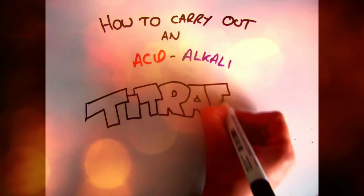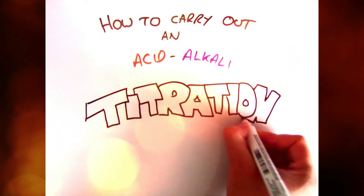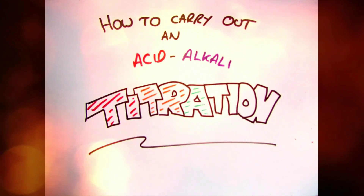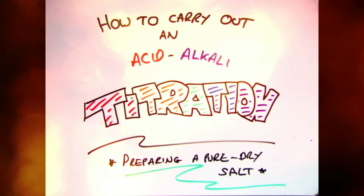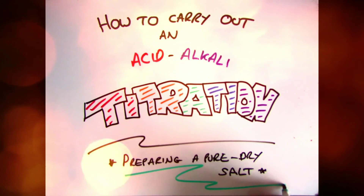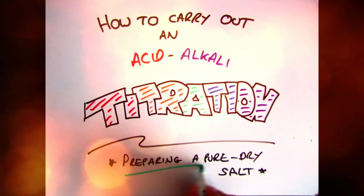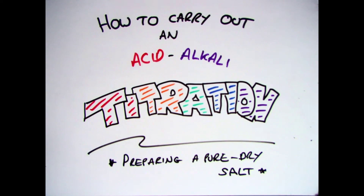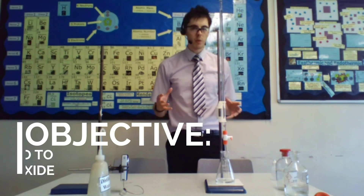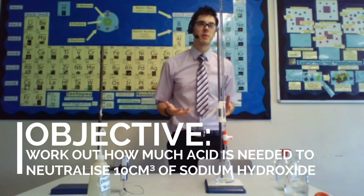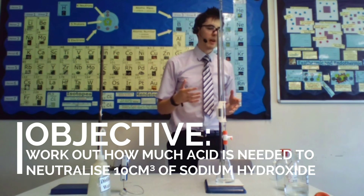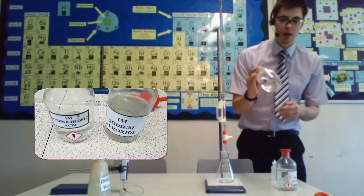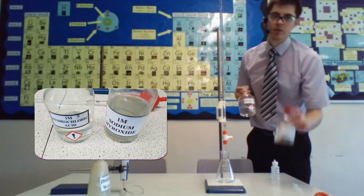Hi there and welcome to this video on acid alkali titrations. The aim for this video is to show you all the different steps needed to carry out an acid alkali titration, as well as showing you how to produce a pure dry soluble salt such as sodium chloride. What we want to do here is a titration experiment to find out how much acid it takes to neutralise 10 ml of sodium hydroxide.